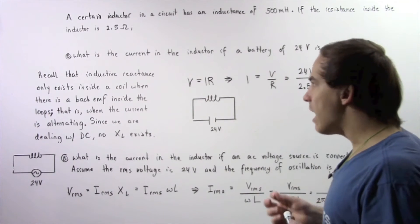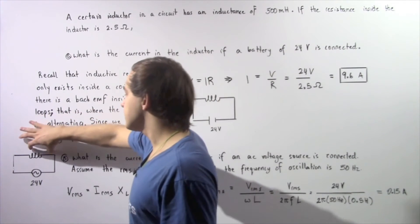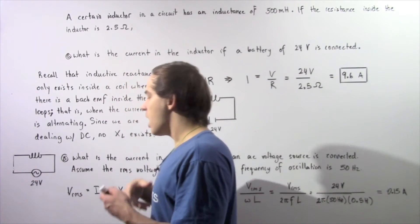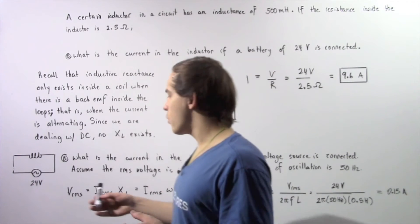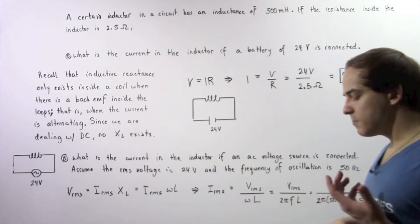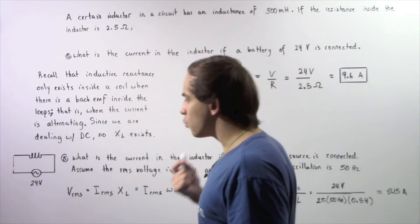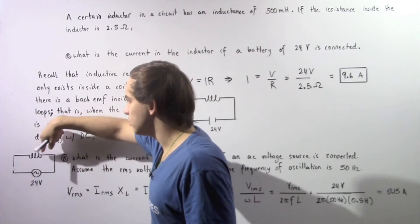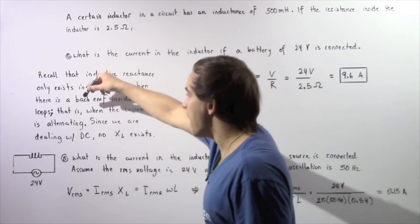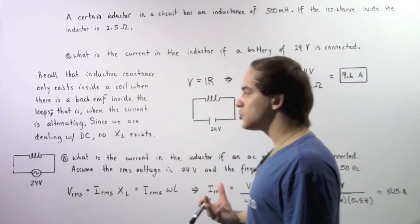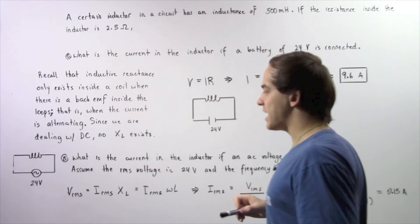Now let's move on to part B and calculate the electric current inside the loops of our inductor if it is connected to an AC source — a voltage source that creates an alternating electric current. With a root mean square voltage of 24 volts, there will now be a changing electric current inside the loops of our inductor that will induce an electromotive force known as a back EMF. That back EMF will oppose the change in flux and provide resistance known as inductive reactance.